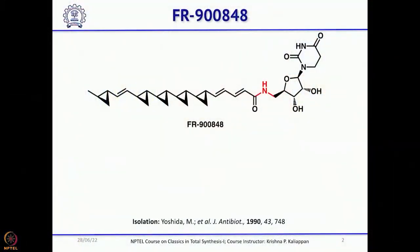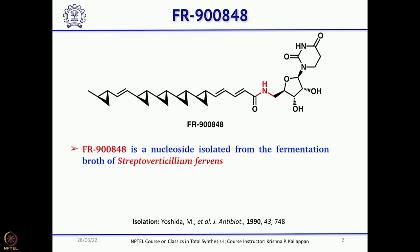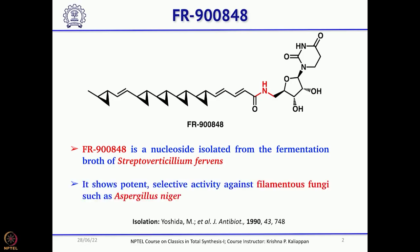Today we will continue our discussion on total synthesis of natural products having three-membered rings, focusing on FR900848, a very interesting natural product isolated and reported in 1990 by Yoshida and his group. This molecule contains five cyclopropanes — it is a nucleoside with a long chain bearing five cyclopropanes and three double bonds. It was isolated from fermentation of Streptoverticillium ferribens and showed exceptional activity against filamentous fungi such as Aspergillus niger.